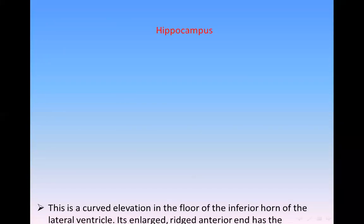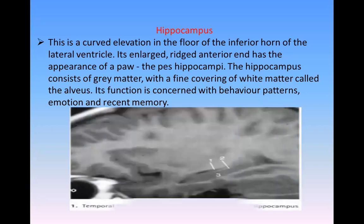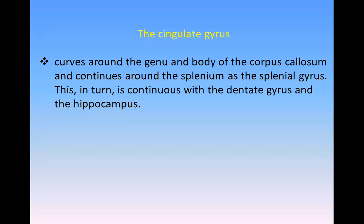The hippocampus is a curved elevation in the floor of the inferior horn of the lateral ventricle; it is an elongated ridge anteriorly. The hippocampus consists of gray matter with a fine covering of white matter called the alveus. Its function is concerned with behavior, emotion, and recent memory. The cingulate gyrus curves around the genu and body of the corpus callosum and continues around the splenium as the parahippocampal gyrus, which is in turn continuous with the dentate gyrus and the hippocampus.